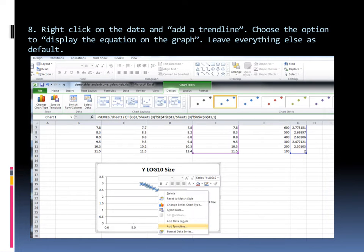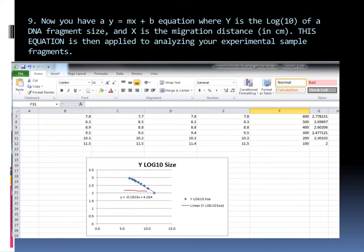Okay, once you have a scatter plot, what you will do is click on the data and choose add trendline, and choose the option to display the equation on the graph, leave everything else as default. And that will get you an equation associated with this data. You can see that it's a straight line. So this equation is the form Y equals MX plus B, something you should be familiar with. So here we have our equation where Y equals negative 0.1923X plus 4.264. Remember that X is migration distance in centimeters, and Y is log to the base 10 of a DNA fragment. So now we have an equation that relates the log to the base 10 of a DNA fragment size to migration distance in a gel. This equation will then be applied to analyzing your experimental sample fragments.